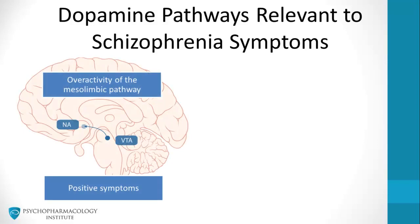In this figure, the mesolimbic pathway is shown in blue. The dopamine theory postulates that positive symptoms such as delusions, hallucinations, and thought disorder are caused by an overactivity of this pathway.